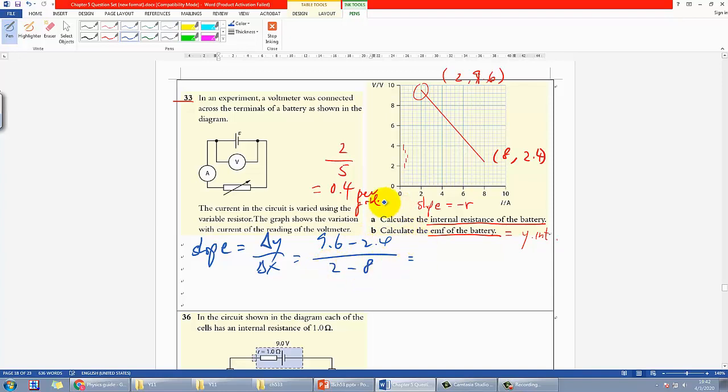What's next is find the slope. Slope equals delta y over delta x, which is (9.6 - 2.4) divided by (2 - 8). Use your calculator and I find negative 1.2. You should also link it with the concept. This is a must to write—don't just simply write the conclusion.